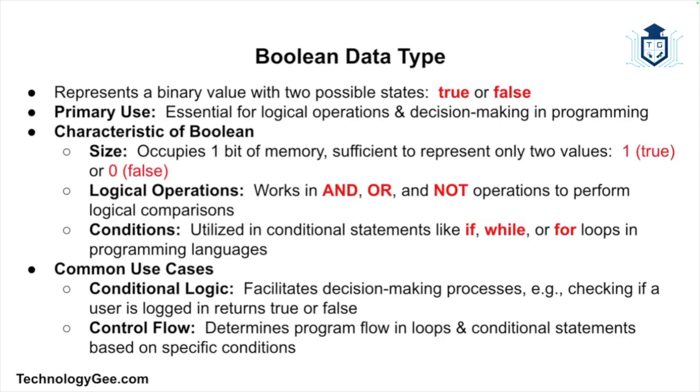Finally, let's talk about the Boolean data type. A Boolean represents a binary value, either true or false. This data type is used primarily for logical operations and decision-making in programs. A Boolean usually requires one bit of memory as it only needs to represent two values: the number one which stands for true, or the number zero which stands for false. Boolean values are used in logical operations like AND, OR, and NOT.